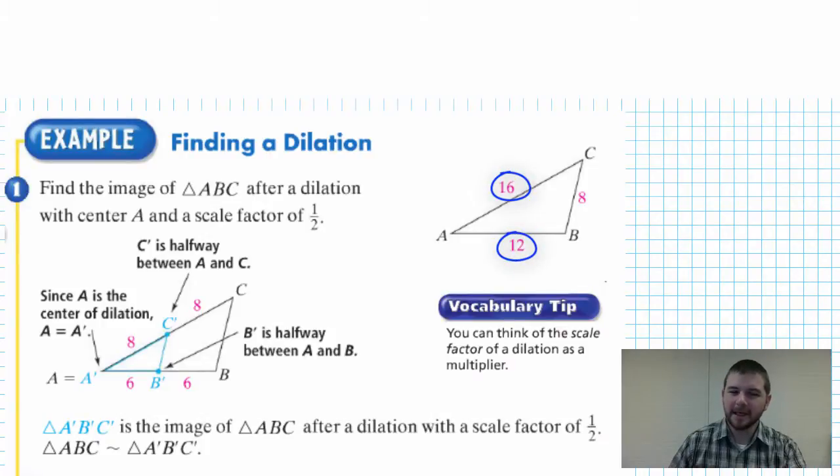The distances are labeled for us. The length of line segment AC is 16 units and the length of line segment AB is 12 units. So in a dilation with a scale factor of one-half, it's almost as though A is connected to C using some sort of line that is 16 units long.